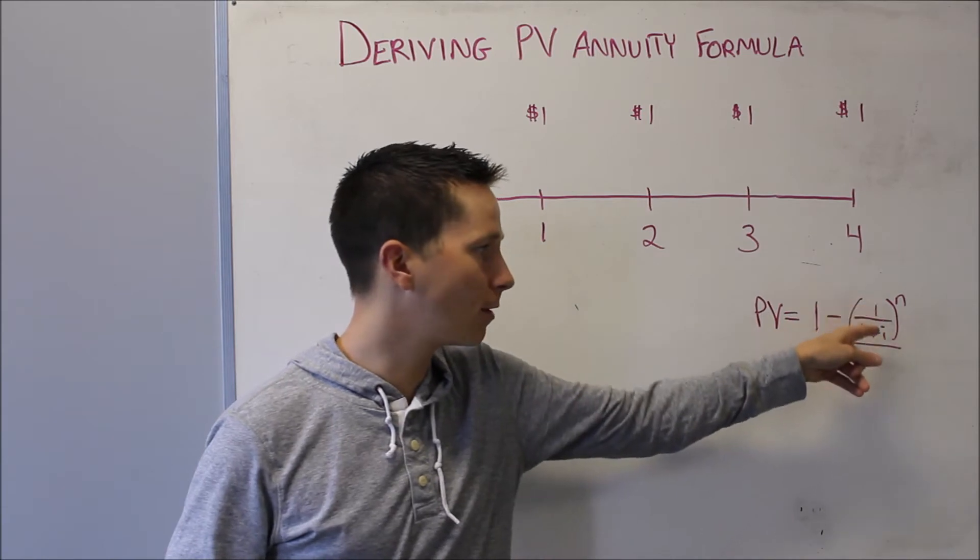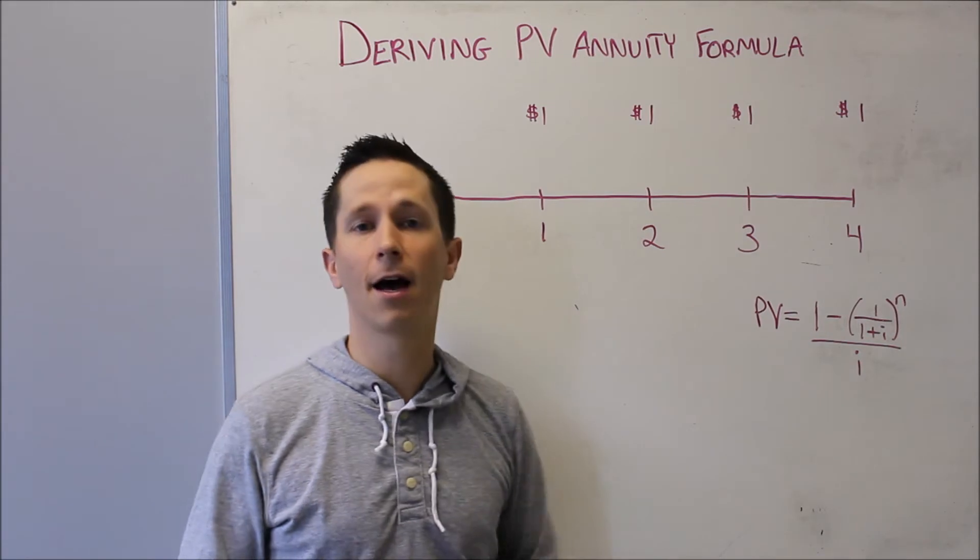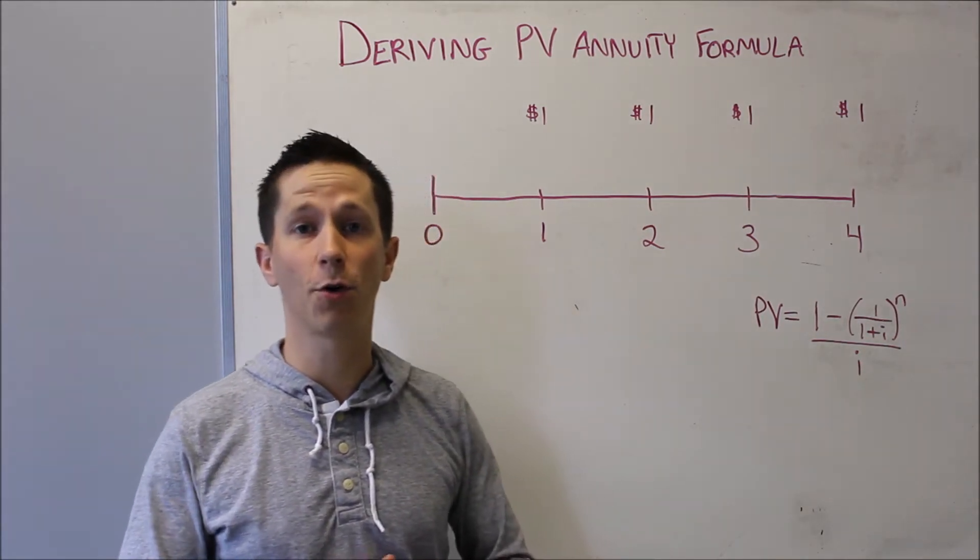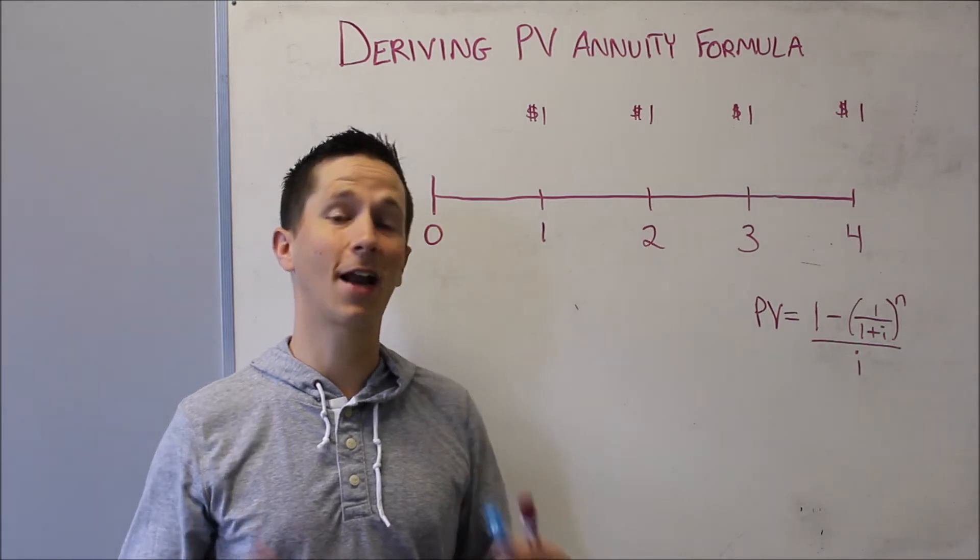You may have seen this part, the 1 over 1 plus i to the n, written as v to the n. Either way, this is the formula for the present value of a stream, a level stream of payments. So let's look at how that comes to be.